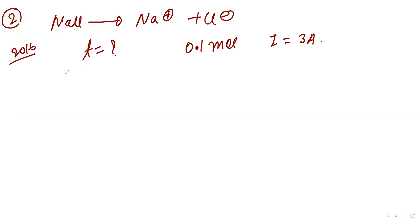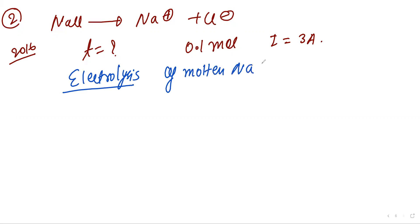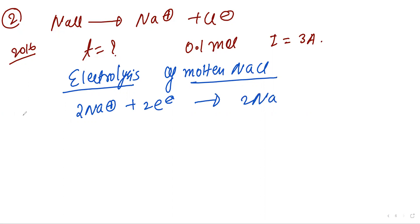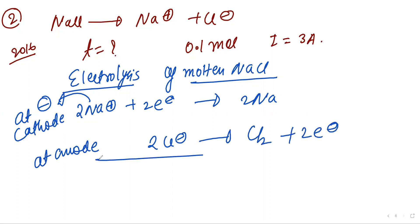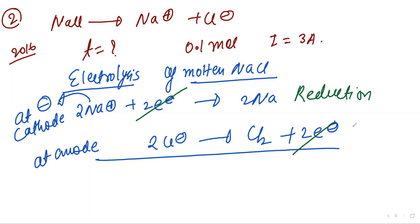Write the electrolysis process for molten NaCl. At the cathode: 2Na⁺ + 2e⁻ → 2Na (reduction, gain of electron). At the anode: 2Cl⁻ → Cl₂ + 2e⁻ (oxidation). Overall: 2Na⁺ + 2Cl⁻ → 2Na + Cl₂.